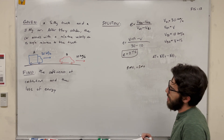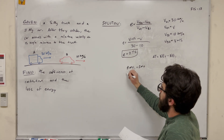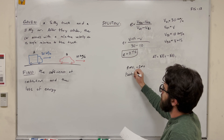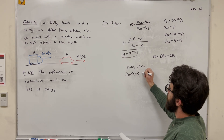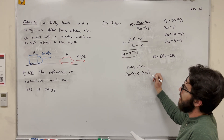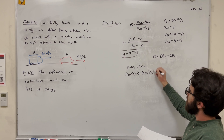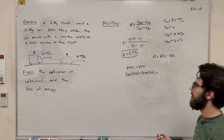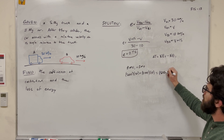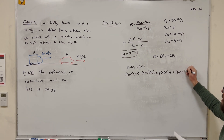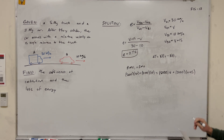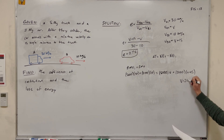So let's add up the initial and final momentums. Initial is before the crash: it's the truck, which is 5,000 kilograms times its velocity of 30, plus the 2,000-kilogram car going 10 kilometers an hour. Then for the final: the truck has 5,000 kilograms and it's going velocity B afterwards — that's what we're solving for — plus the 2,000-kilogram car times velocity B plus 15. So now we have this equation with one unknown, and if you solve for B, you get that B is equal to 20 kilometers an hour.